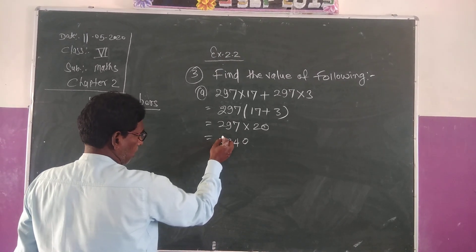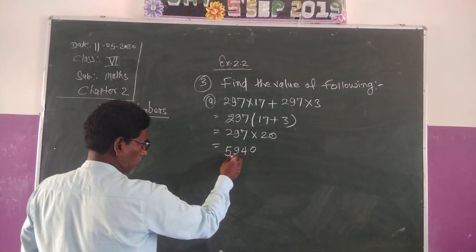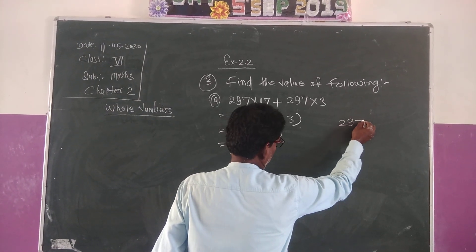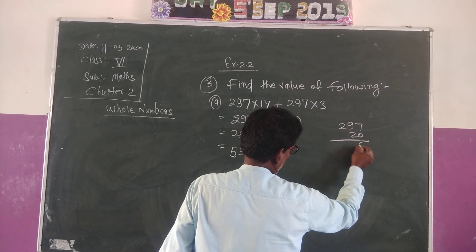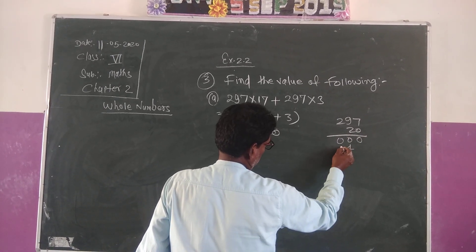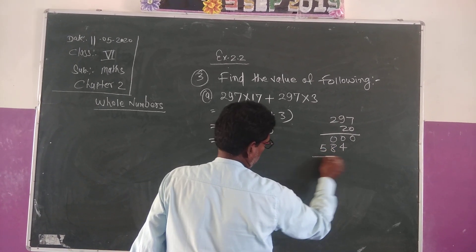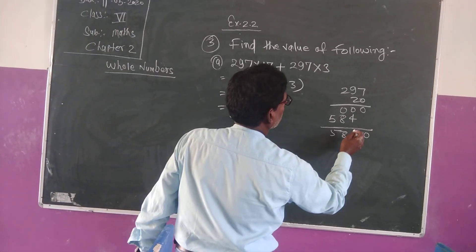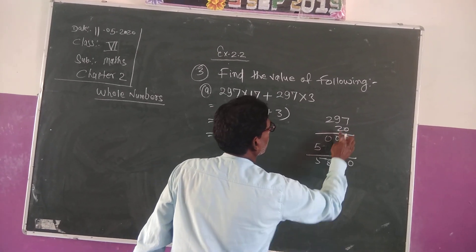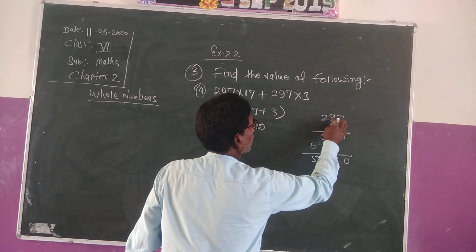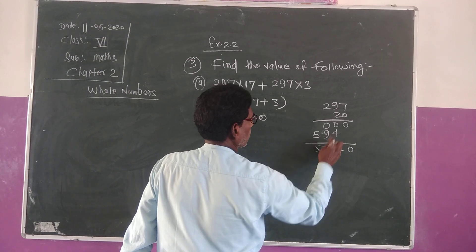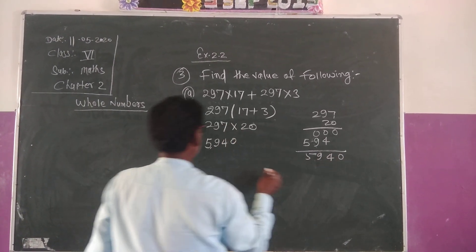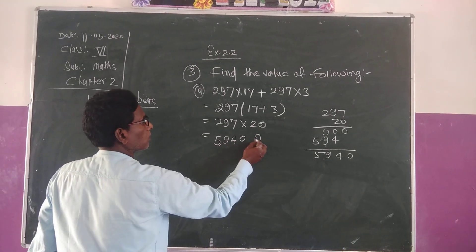297 into 20. Now we multiply 297 with 20. We can solve: 297 times 20 equals 0, then 180 plus 14 is 194. 4 carry 1, then 18 plus 1 is 19, carry 1, then 4 plus 1 is 5. Result: 5940. Answer.